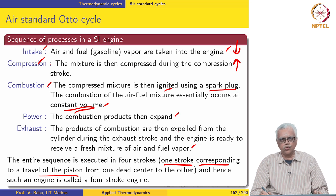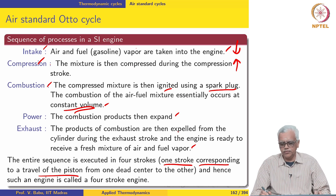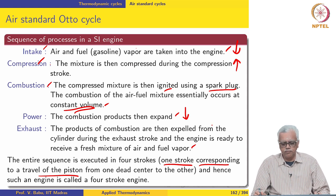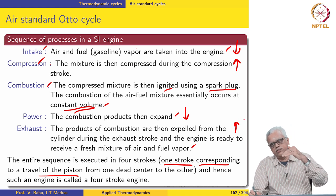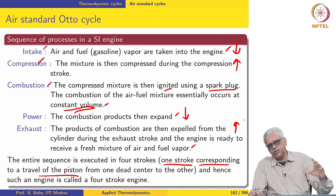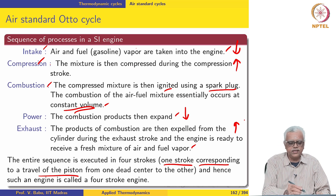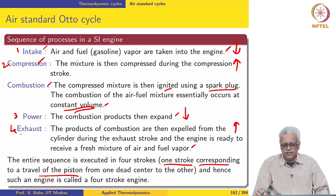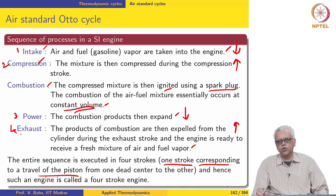Combustion is not really a stroke but a process between the compression stroke and the power stroke. During the power stroke, the gases push the piston downward generating power. During the exhaust stroke the piston moves upward expelling exhaust gases. This entire sequence is executed in four strokes, so such an engine is called a four-stroke engine.